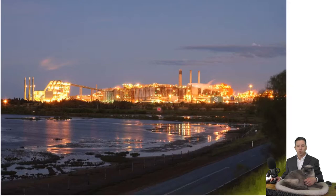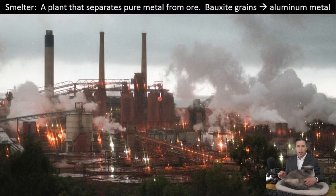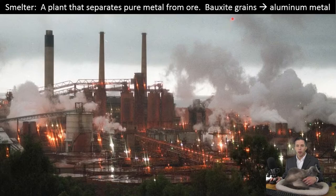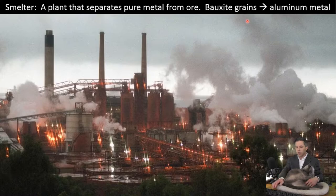A smelter is built near a waterway like a bay because they're expecting shipments of bauxite. A smelter is a plant that takes that red bauxite material and splits it apart so that we have aluminum metal — going from bauxite grains to pure metal. That's what a smelter does, and we're going to talk about the stages here.